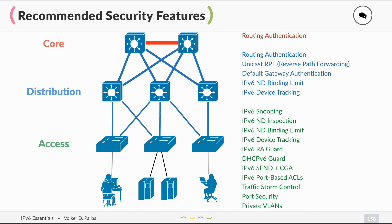The DHCPv6 guard works just like with IPv4. You can set a trusted port where the DHCPv6 server is attached, and all other ports should not be trusted. If there is a DHCPv6 advertisement from a client port, that port should be disabled because it might be an attacker.